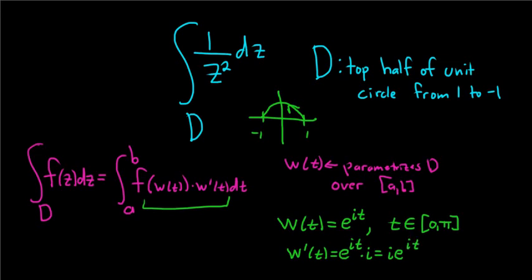And then f of w of t, I'll do it up here. That's f of e to the i t. That's simply just replacing z with e to the i t, so it'll be 1 over e to the i t squared.